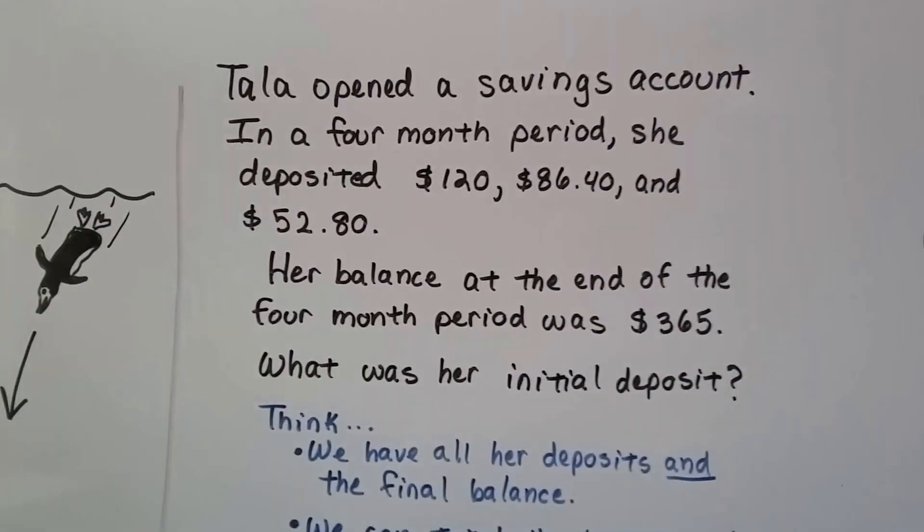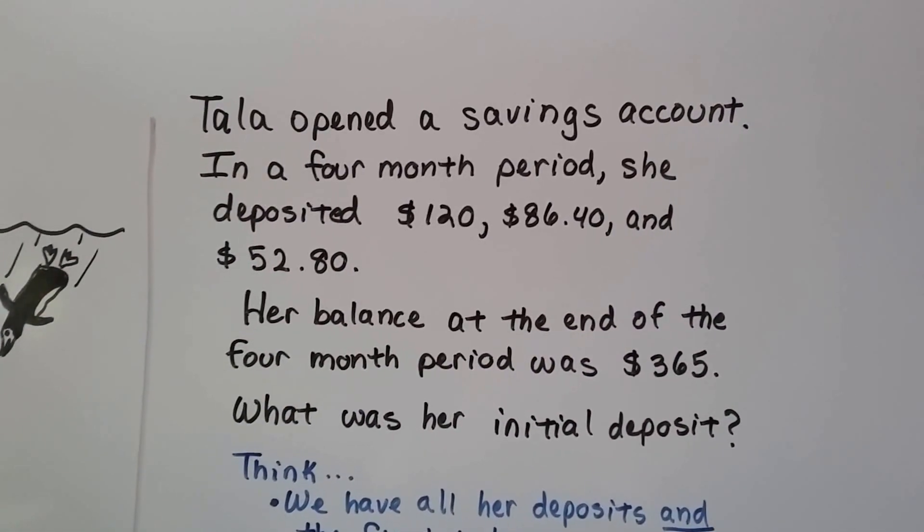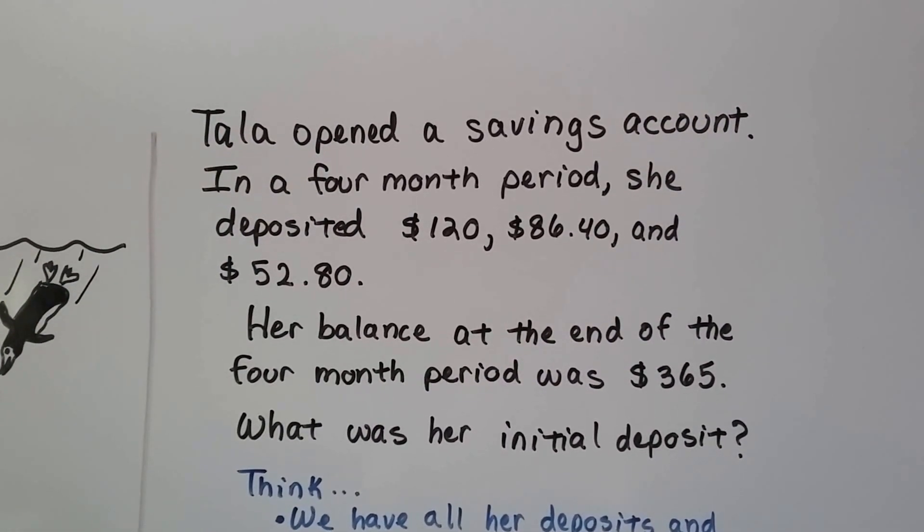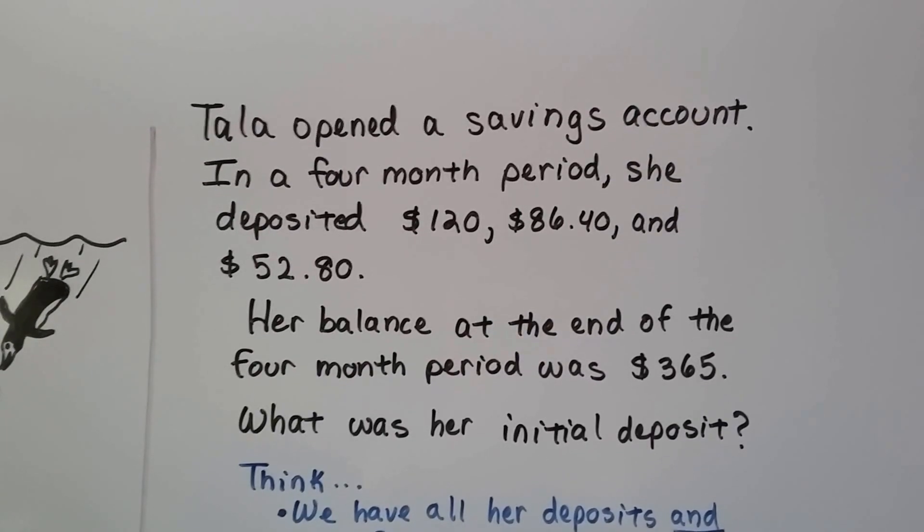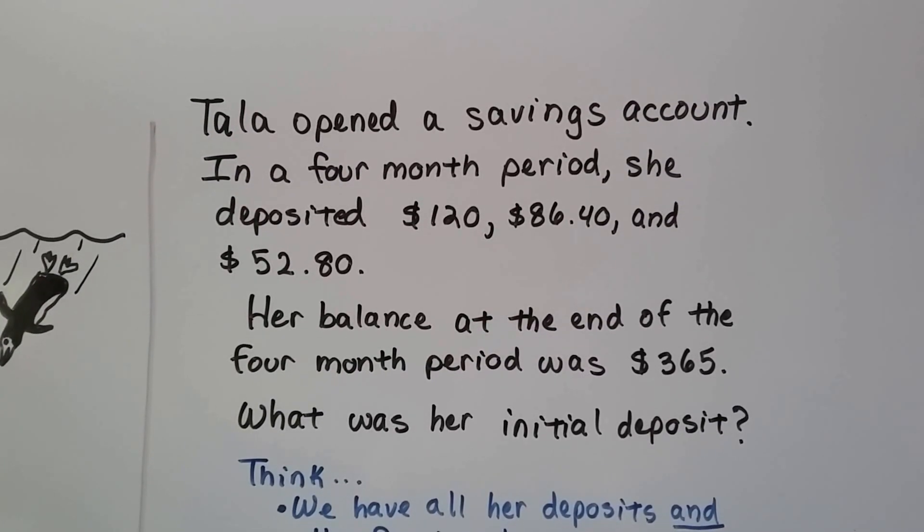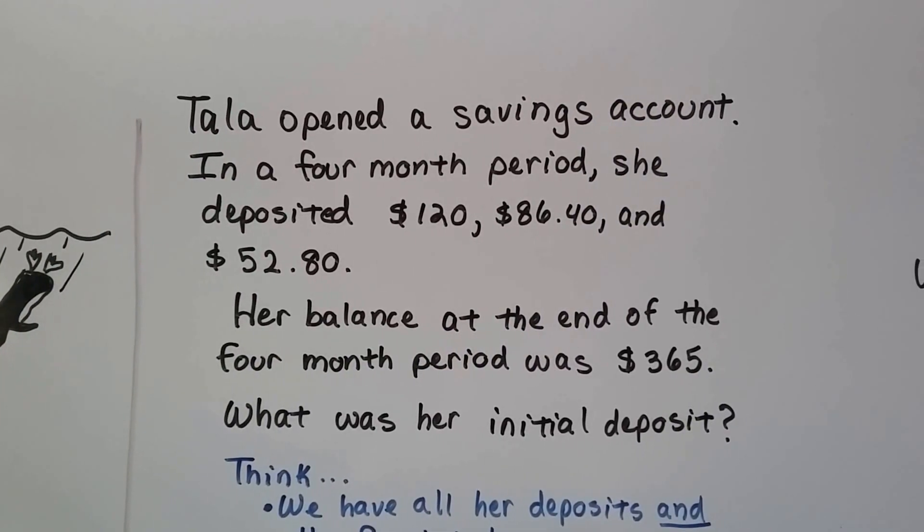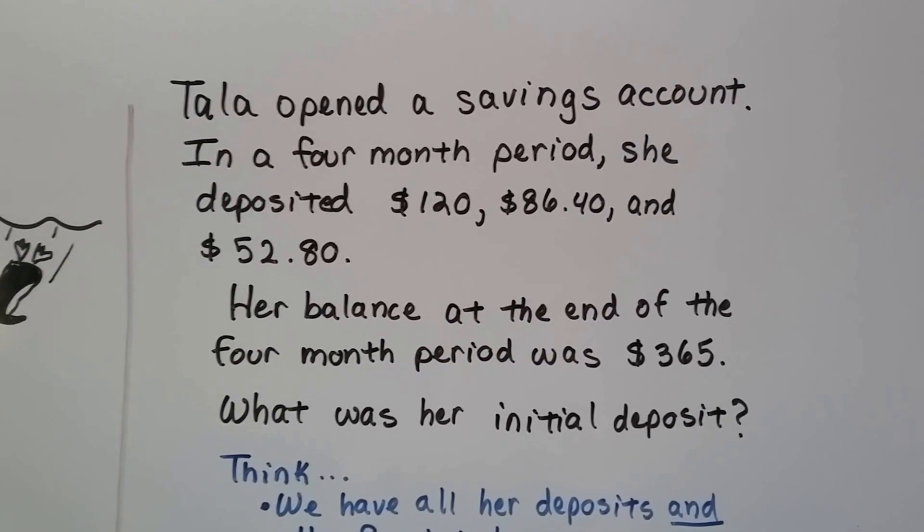All right? So, Tala opened a savings account. In a 4-month period, she deposited $120, $86.40, and $52.80. And her balance at the end of the 4-month period was $365. So, what was her initial deposit?